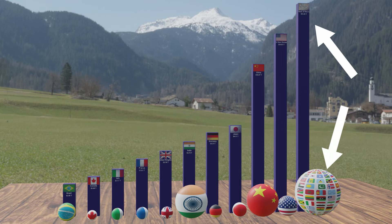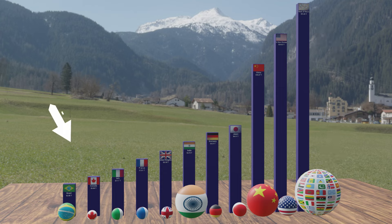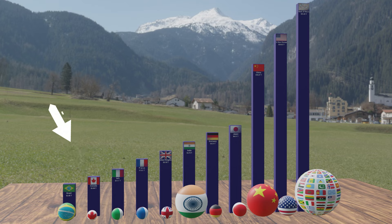This underscores the significance of smaller and developing economies when considered as a group. Canada, with a relatively small population, has a GDP comparable to countries with significantly larger populations, like Brazil and Italy. This suggests a high level of economic productivity and wealth per capita in Canada.